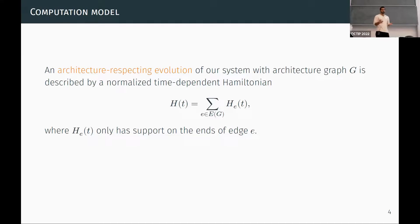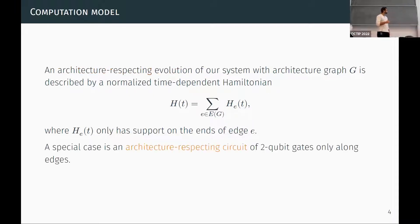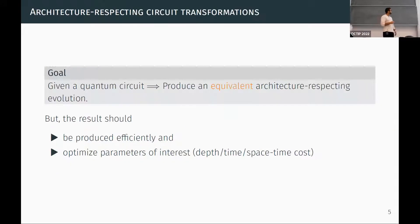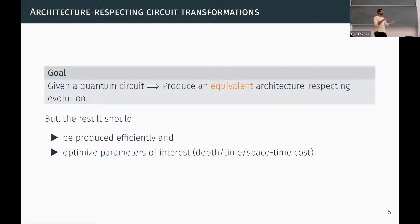When we have such constraints, how do we describe our computational model? We talk about computation on such architectures in the form of what we call an architecture-respecting evolution, where we have a normalized time-dependent Hamiltonian with terms only supported on edges of our graph. A special case would be a quantum circuit where we only have gates that lie on edges of our graph. Our goal is, given an arbitrary quantum circuit, to produce an equivalent time evolution or circuit that respects the graph connectivity, while minimizing depth, time, or space overhead.